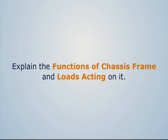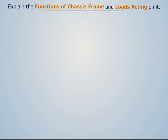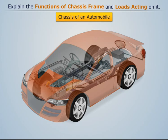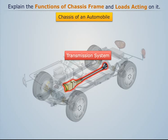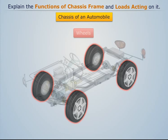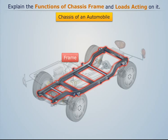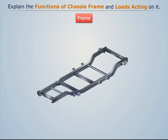Explain the functions of chassis frame and loads acting on it. We know that an automobile chassis consists of the following components: engine, transmission system, suspension system, wheels, steering system, braking system, and frame. Now let's discuss the frame in detail.